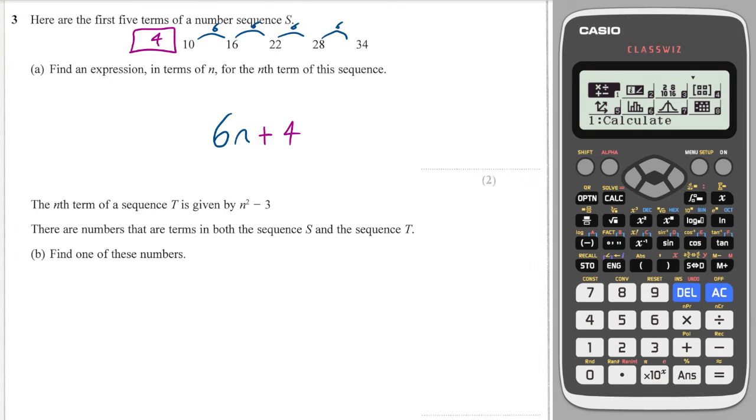What I might do is just substitute in a few n values to see what numbers come out of this sequence. When n equals one, I get 1² - 3, which is -2. When n equals two, I get 2² which is 4 - 3 = 1. That's not quite doing it. Let's try n equals three: that would be 9 - 3 = 6. N equals four: 16 - 3 = 13.